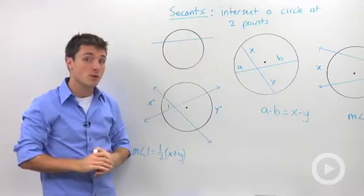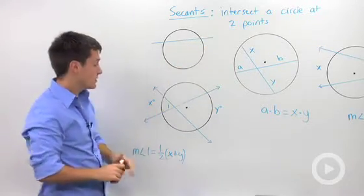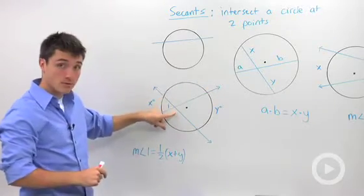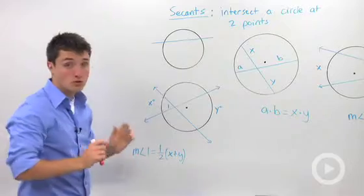So a couple of key things of note about secants. The first is when you have an intersection of two secants that's inside the circle. You're going to create two different angles.